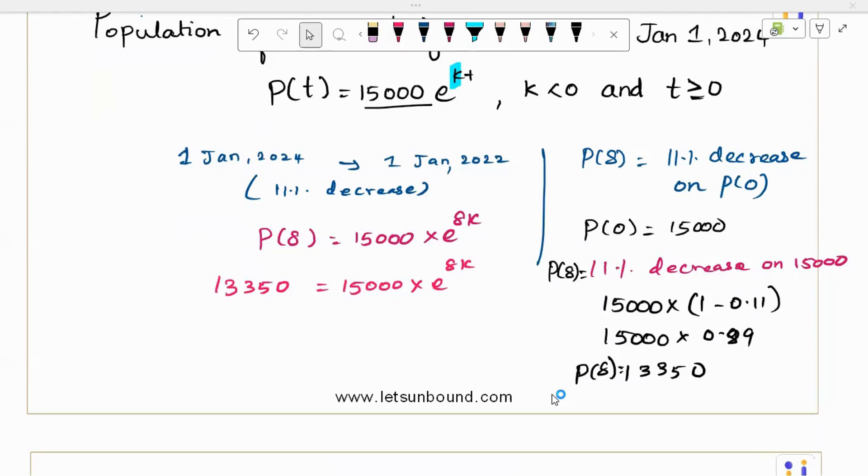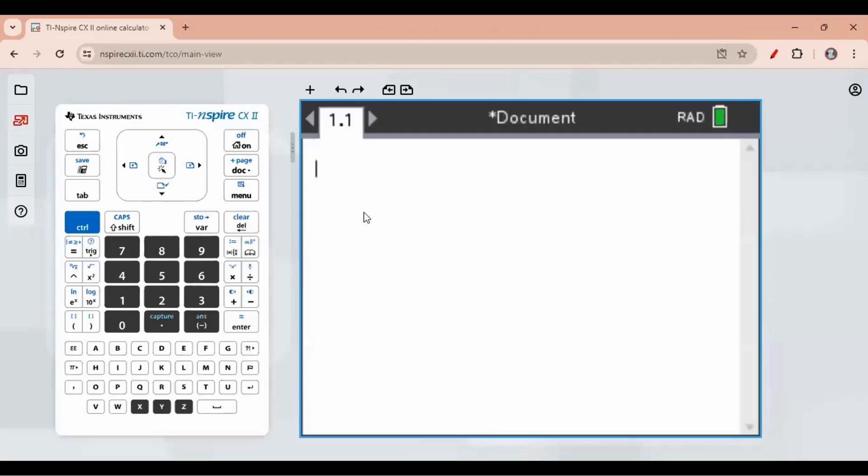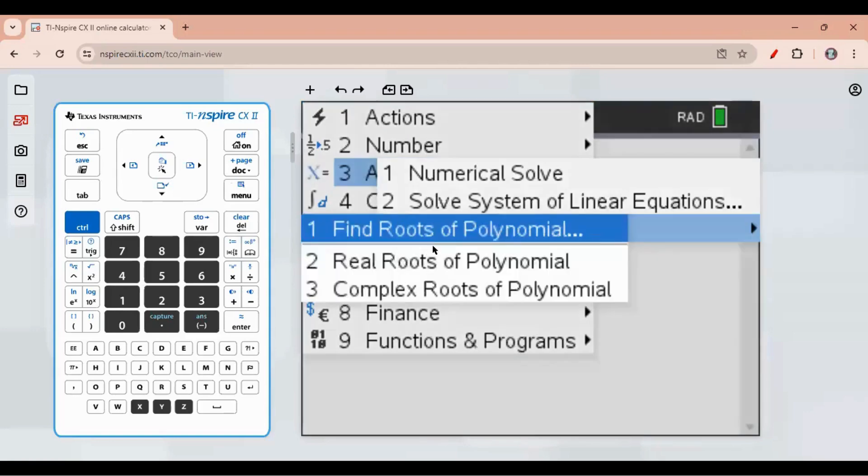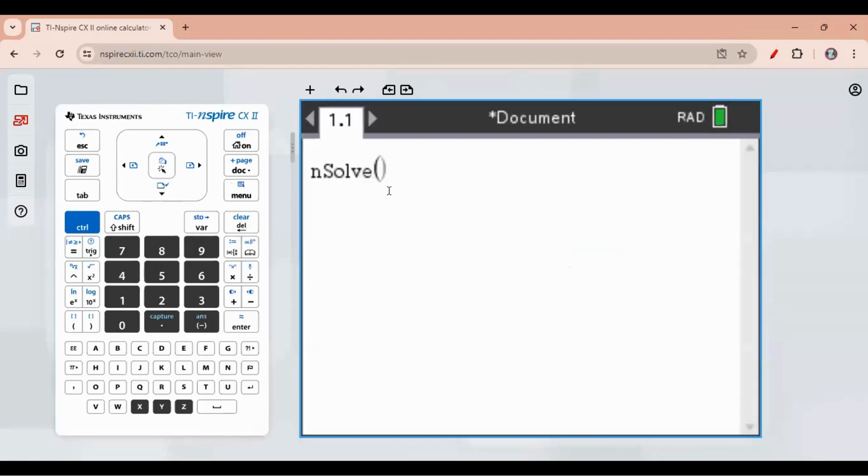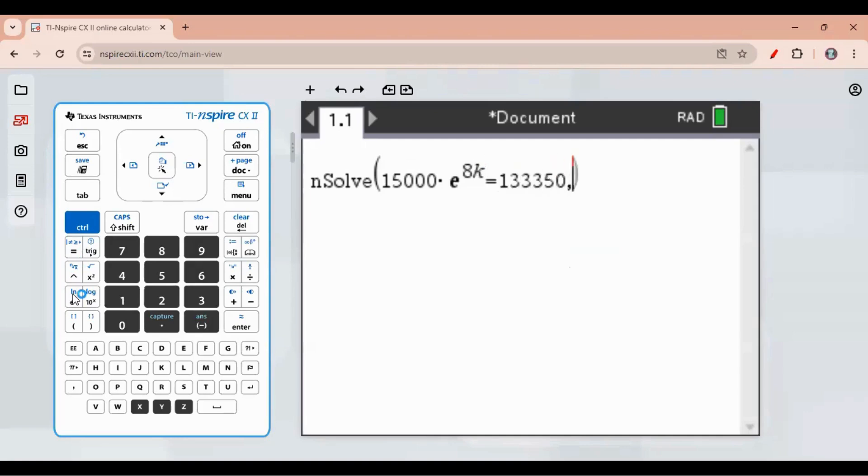Let's take a calculator and we can go for numerical solve. We got this equation 15,000 times e power 8k. So go for this calculator. E power 8k equals 13,350. And comma,